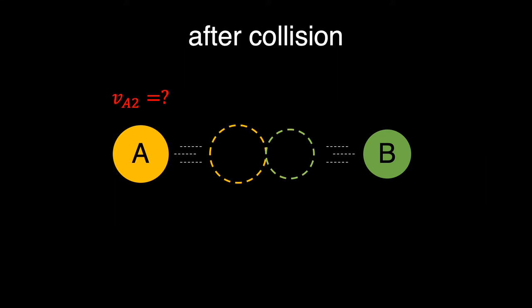After collision, we would like to determine the new magnitude and direction of ball A velocity and the new magnitude and direction of ball B velocity. Based on the given, no other forces are acting on the two balls, not even friction.